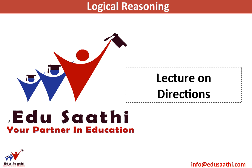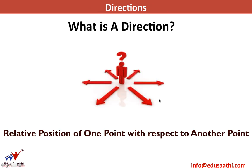Hello and welcome to Edusati's lecture on directions. A direction is the relative position of one point with respect to another. For example, point A is towards the left of point B, and point B is towards the right of point A. We can take any one of these points as a reference point and define the direction of the other point.